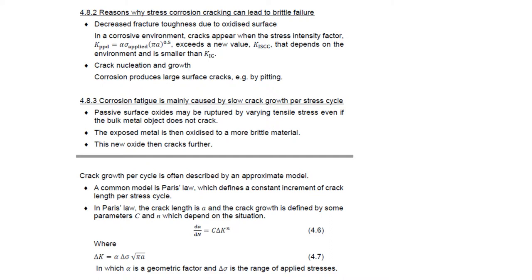The mechanism describing this is Paris' Law: dA/dN = C·(ΔK)^n, where dA/dN is the crack length change per stress cycle, ΔK is the change in stress intensity factor during the stress cycle, and n is an empirically determined parameter. This equation models the speed of crack growth per cycle and is important when straightforward overload per equation 4.5 is not a problem, but crack growth from a varying applied stress remains a concern.